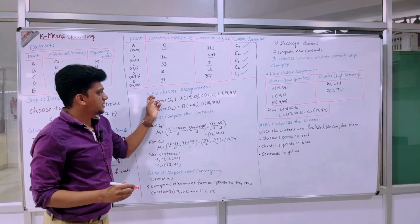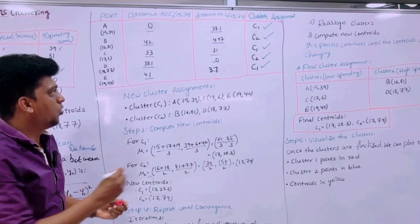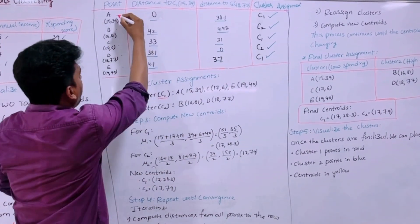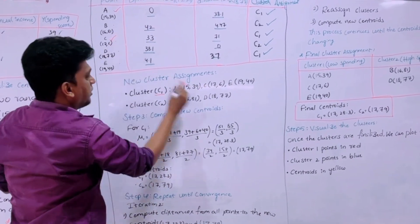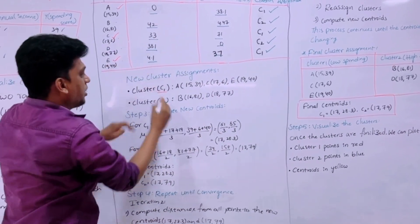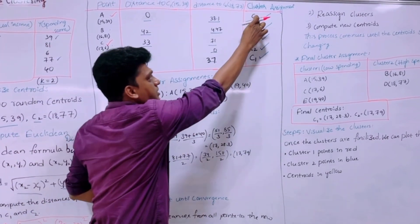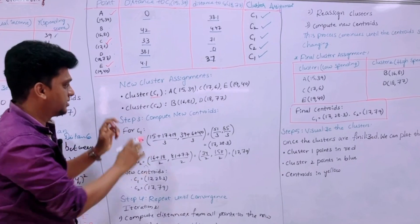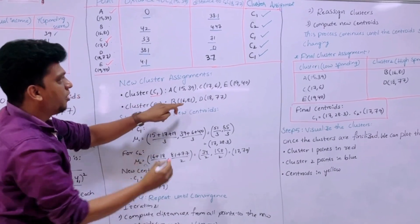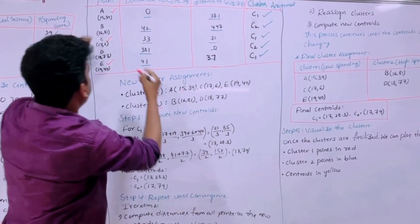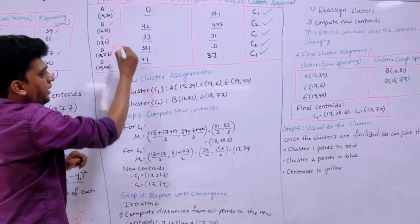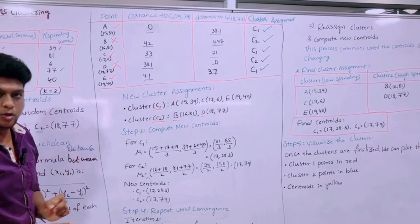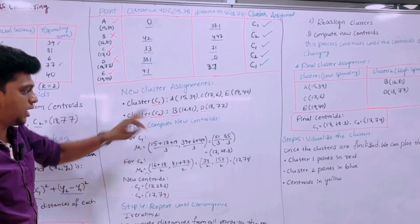Now we are going to assign the new clusters. Now based on the cluster assignment that is C1, we are having A, then C, then E that belongs to cluster 1, because all these come under the category C1. So this is cluster 1. Then in cluster 2 we are having point B and point D. So this is the new cluster assignment C1 and C2.